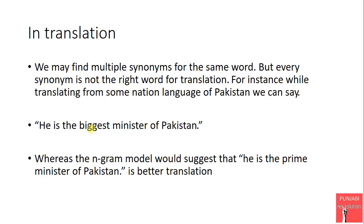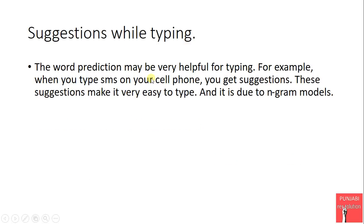Another application is suggestions while typing, which you've likely observed on mobile phones. When you try to type a word, similar words are suggested based on two things: the spelling of the word, and the N-gram model — because your smartphone is automatically trained on your text messages. Based on the N-gram model, it predicts the right word to type. These are a few applications of N-gram models, and there are many others. Overall, N-gram models are very important — they are the building blocks of speech processing.